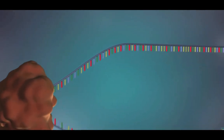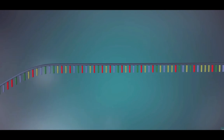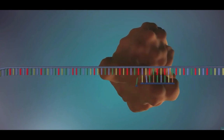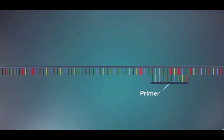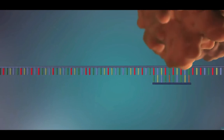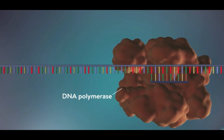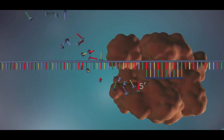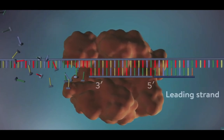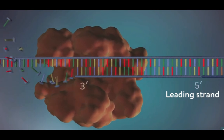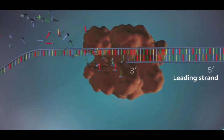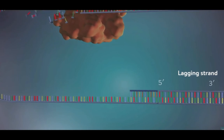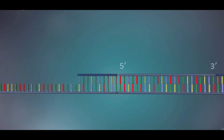The separated strands each provide a template for creating a new strand of DNA. An enzyme called primase starts the process — this enzyme makes a small piece of RNA called a primer, which marks the starting point for the construction of the new strand of DNA. DNA polymerase binds to the primer and makes the new strand of DNA. DNA polymerase can only add DNA bases in one direction: from the 5' end to the 3' end. One of the new strands, the leading strand, is made continuously — DNA polymerase adding bases one by one in the 5' to 3' direction. The other strand, the lagging strand, cannot be made in this continuous way because it runs in the opposite direction.